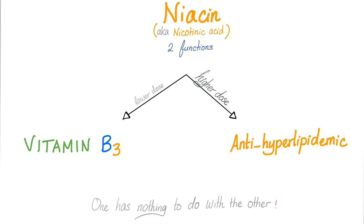The fifth medication is niacin, also known as nicotinic acid. Nicotinic acid is not nicotine. Niacin at a lower dose acts as a vitamin B3, but at a higher dose it's an anti-hyperlipidemic drug. Today we're talking about the anti-hyperlipidemic niacin, not the vitamin B3 niacin.